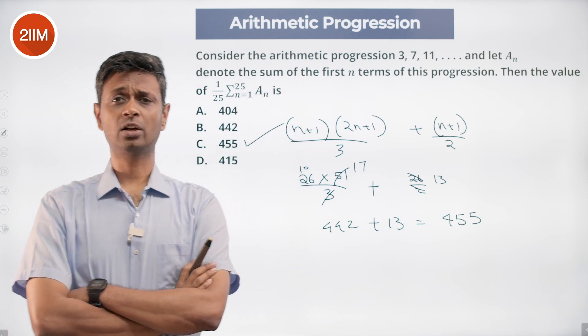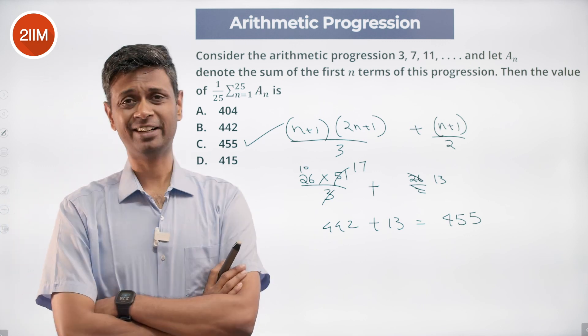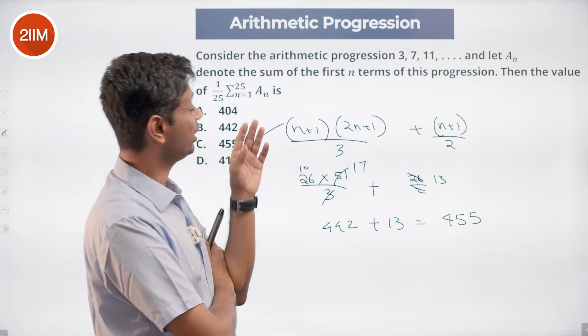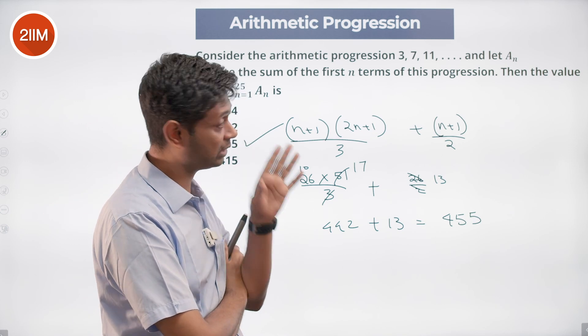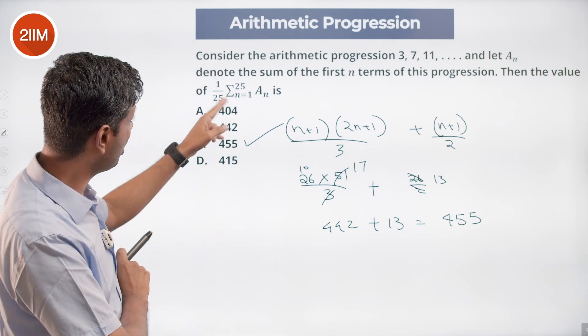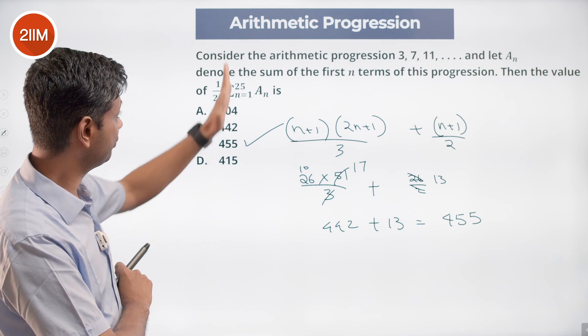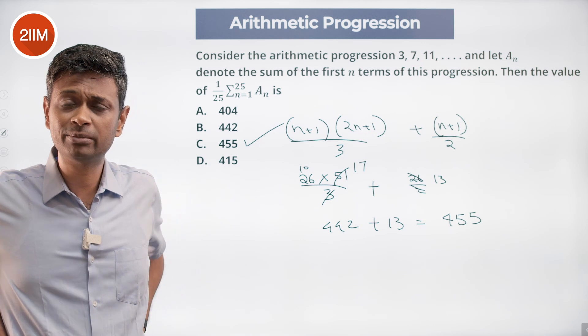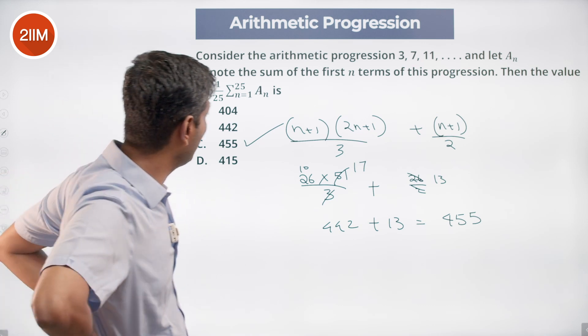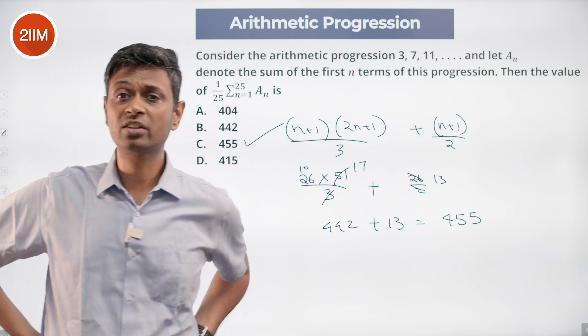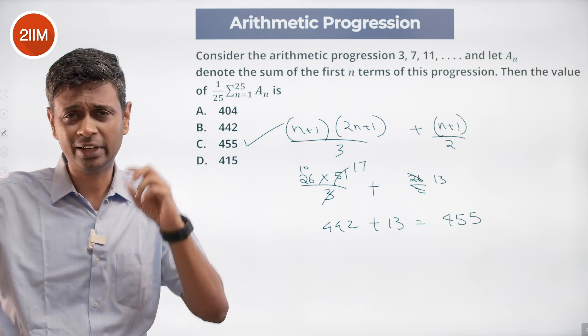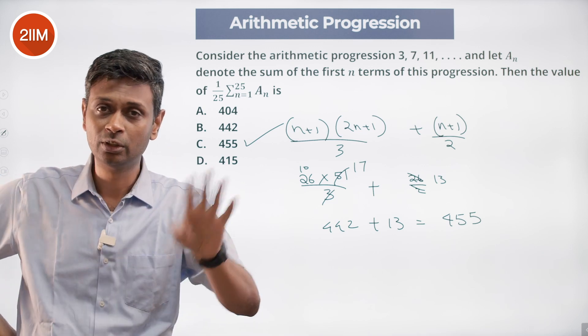Just pure raw brute force. I tried to do it by a more elegant method. I didn't get anywhere. I thought I would do 3, 3 plus 7, 3 plus 7 plus 11, all of that. If I do sigma 1 to 25 a_n, my first term gets added 25 times, second term gets added 24 times, third term gets added 23 times, all the way to the 25th term which just gets added one time, then divide by 25. I didn't go anywhere. I decided, look, I'm not doing any cute thing. Brute force it to get to the answer.